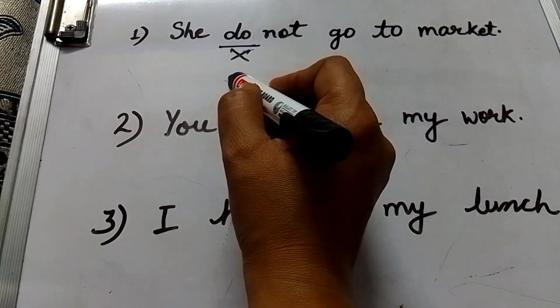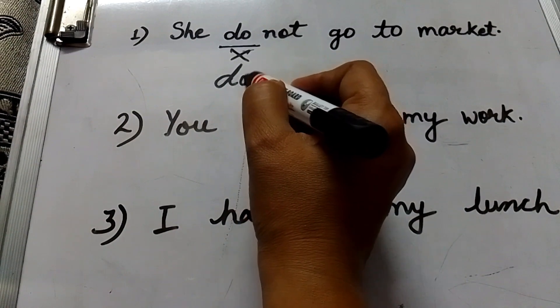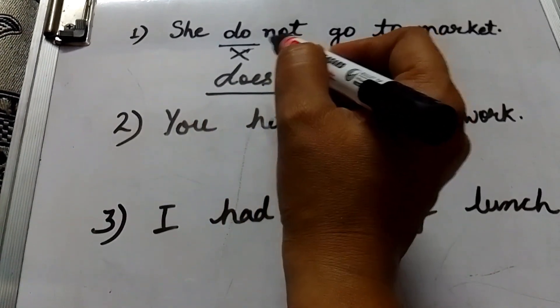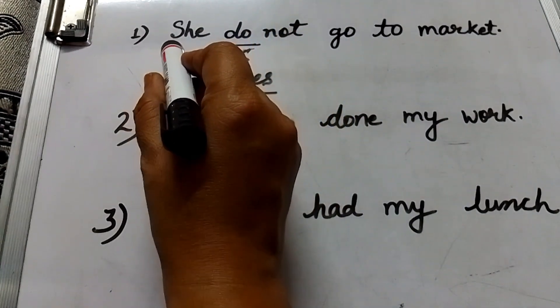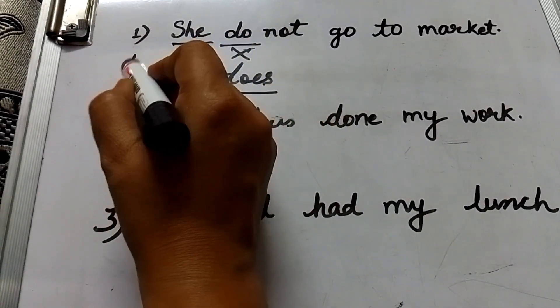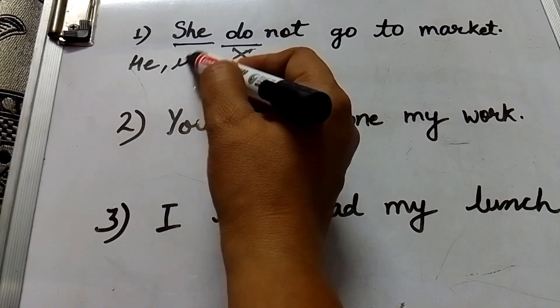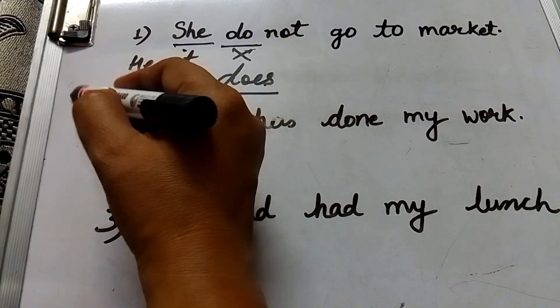With she we will not use do but we will use does. Okay, because she is a singular subject. So with singular subject we will use does. Singular subject like he, she, it or any one name.